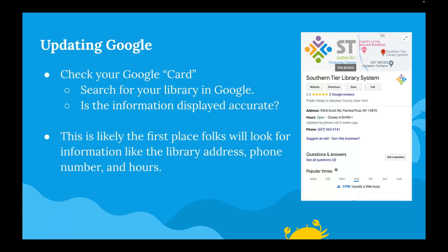Google uses something called your Google card. If you google your library, you'll see search links on the left-hand side and on the right-hand side a square with information specific to the business — that's the Google card. I recommend googling your library and checking whether the information in the Google card is correct and relevant — are your hours and things like that accurate? Folks will google your library hoping to find the phone number or hours, and you want to make sure that information is correct.